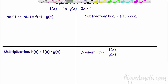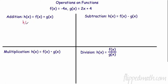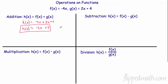First thing, right off the bat, let's see what we got here. So if I want to add two functions, it's just as easy as you would think. So my new function h of x is when I add f of x — f of x is negative 4x — and I add that together with g of x, which is 2x plus 4. So now I just combine. Negative 4 and 2 is negative 2x plus 4. So h of x, the combination of adding the two together, gives me negative 2x plus 4.